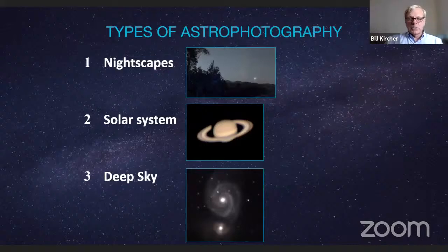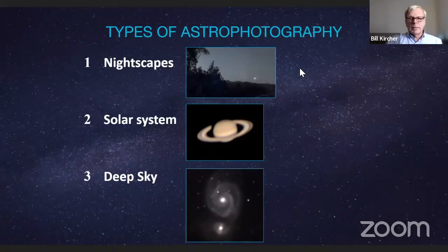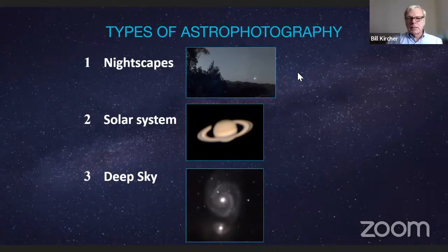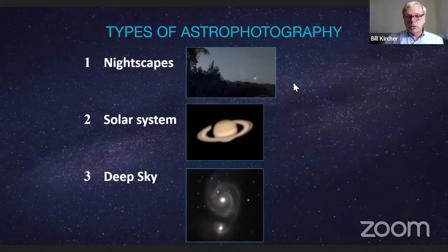The next category is solar system. As I mentioned, we're going to do just the bright planets and the moon tonight, but it would also include solar imaging — anything in our solar system that you can actually image. Then there's deep sky: things beyond our solar system — galaxies, nebulae, clusters. That's the part that James will handle.